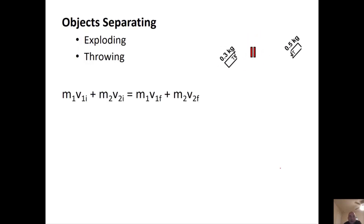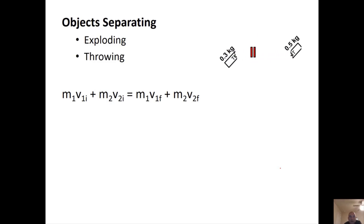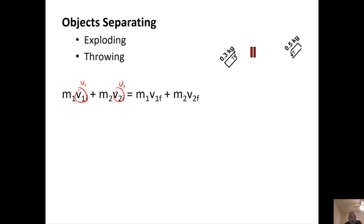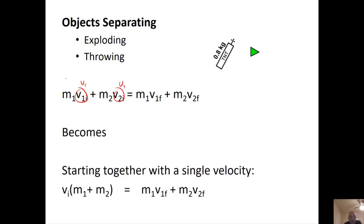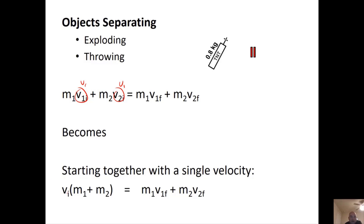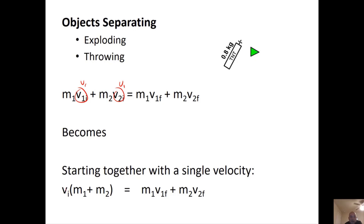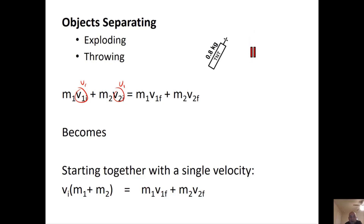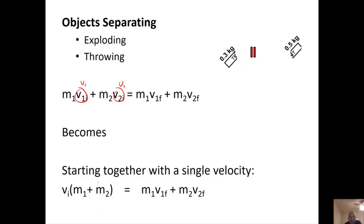First we'll break down the equation for when objects were one and then separated. If objects were one, we can say the initial velocity for both was the same. Mathematically, we can factor out the vi and put it in front — it becomes vi times the objects combined equals the objects afterwards, each with their own mass and velocities. Add those together and it equals the entire momentum before.